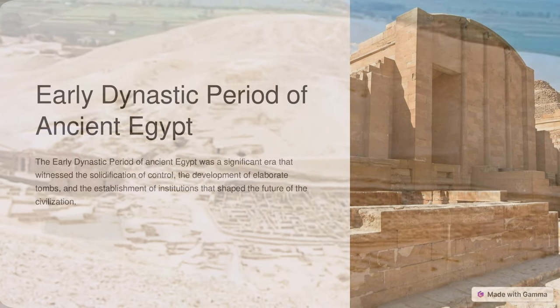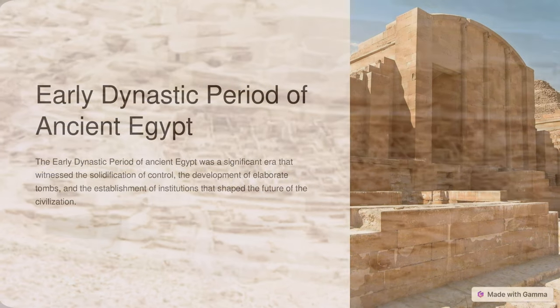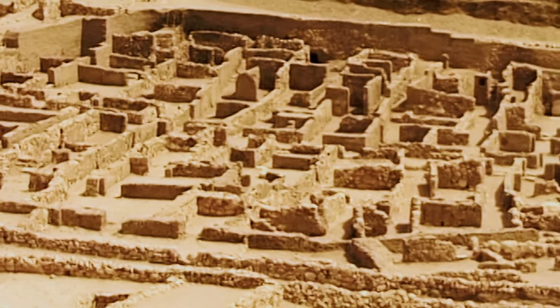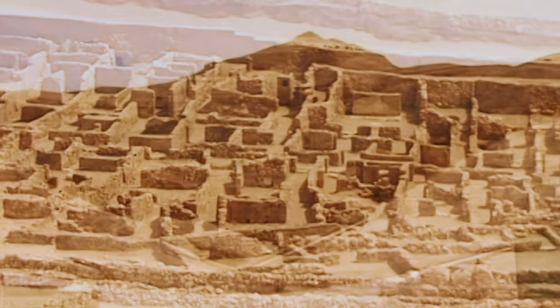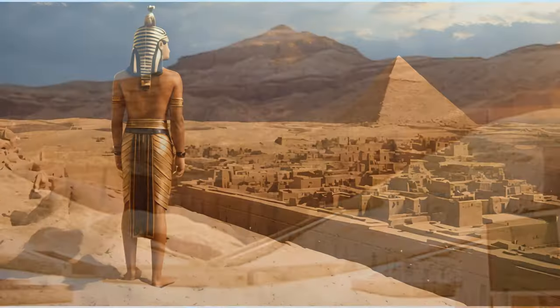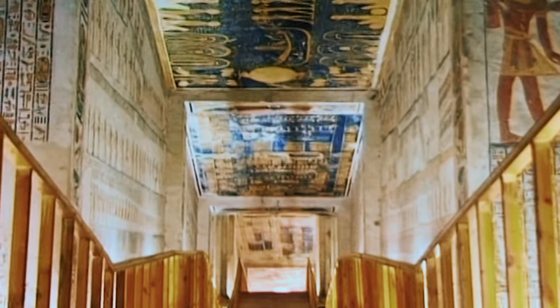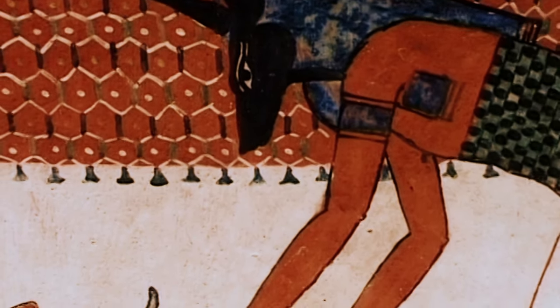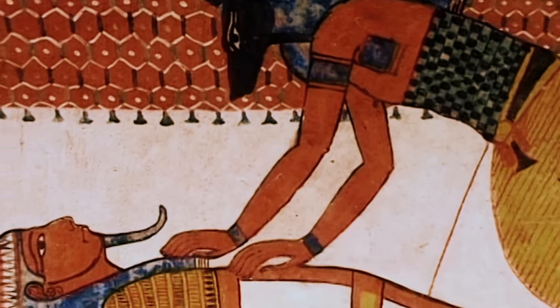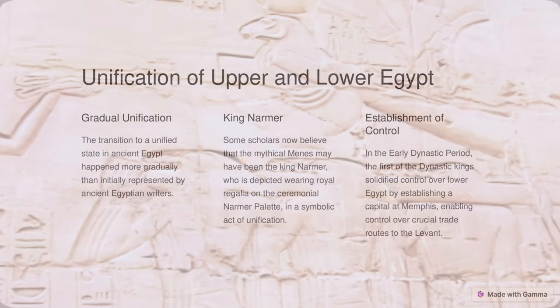Now we step further to the early dynastic period. The early dynastic period was approximately contemporary to the early Sumerian-Akkadian civilization of Mesopotamia and of ancient Elam. The 3rd century BC Egyptian priest Manetho grouped the long line of kings from the first king Menes — also known as Narmer — to his own time into 30 dynasties, a system still used today. He began his official history with the king named Meni, or Menes in Greek, who was believed to have united the two kingdoms of Upper and Lower Egypt. The transition to a unified state happened more gradually than ancient Egyptian writers represented, and there is no contemporary record of Menes. Some scholars now believe that the mythical Menes may have been the king Narmer, who is depicted wearing royal regalia on the ceremonial Narmer Palette, in a symbolic act of unification.